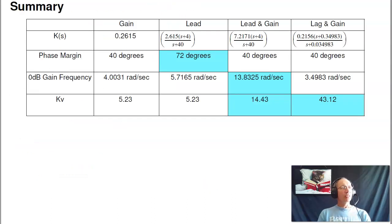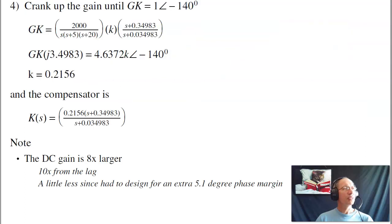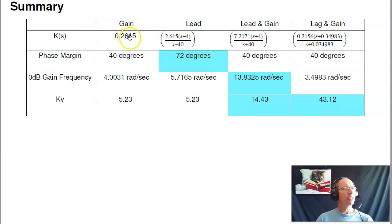So comparing it, we've been looking at a gain compensator, lead, lead plus gain, and lag. If I take that same system, this is the 3 poles, 1 at 0, minus 5, minus 20. If I design a gain compensator, I'll have a 0 dB gain frequency of 4 radians per second, and kV is 5. Call that the base case.